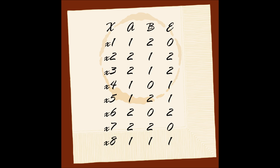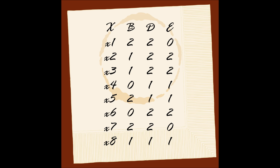Now we can compare the different reducts and choose the best one. Reduct AB lets us create 1 rule with support 2, 4 rules with support 1, but leaves 2 tuples for which we cannot create certain rules. Reduct BC lets us create 8 rules all with support 1 and 100% confidence. Reduct BD lets us create 2 rules with support 2 and 4 rules with support 1. We select reduct BD because it has no inconsistencies and makes rules with the highest support.